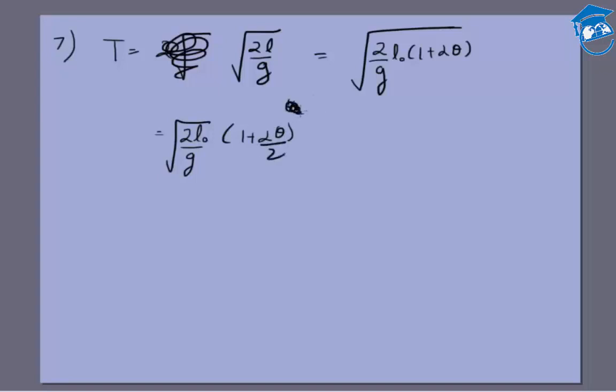Using the approximation (1 + x) to the power y equals 1 + yx when x is very small but greater than 0, we can write it as 1 + αθ/2.